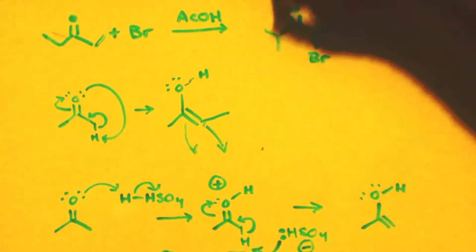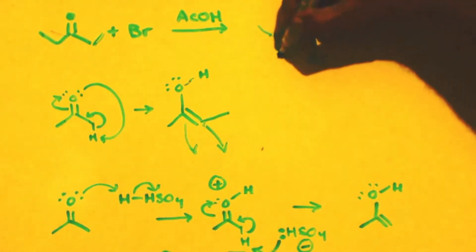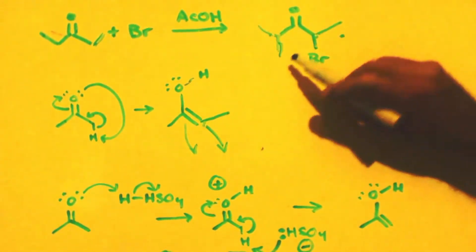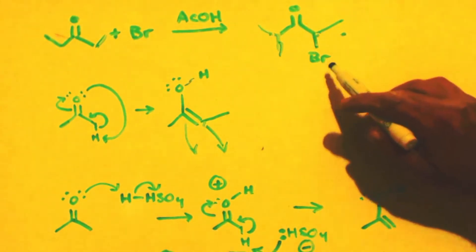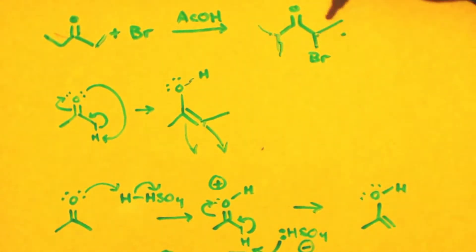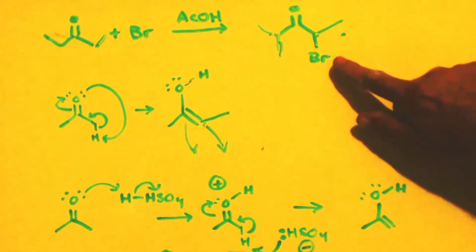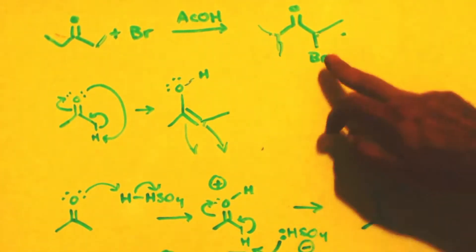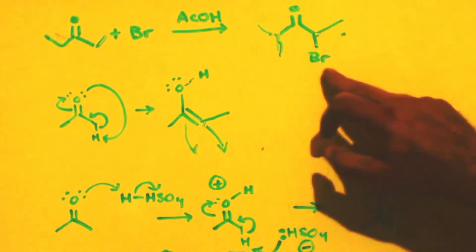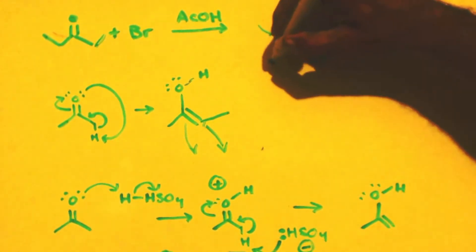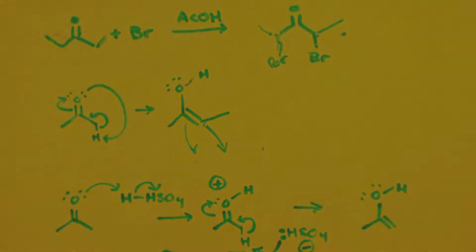So if you put excess bromine in, twice as much as you need, one will add here and one will add here. If you only add enough for one, it'll always add just on the one side. I mean, not always. You know how chemistry is. You make them 50 million zillion byproducts or whatever. But in general, the majority will be one addition on one side. If you add double bromine, it would be one addition on each side.